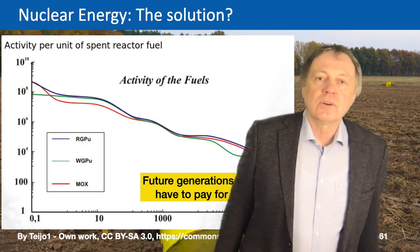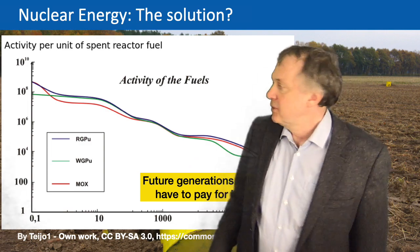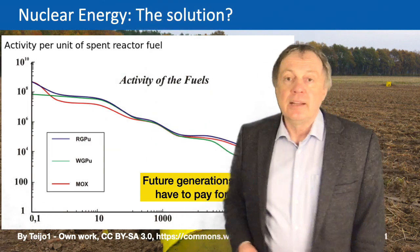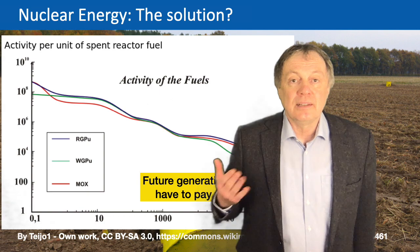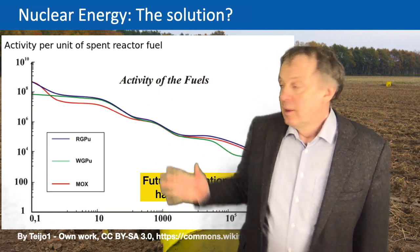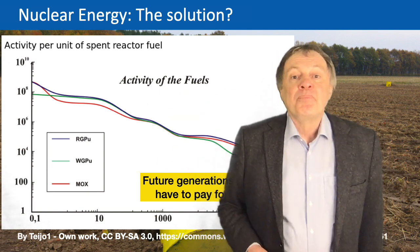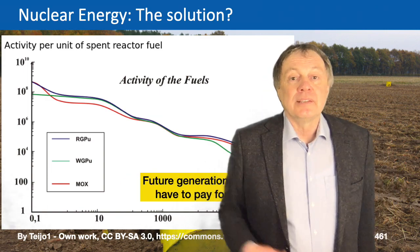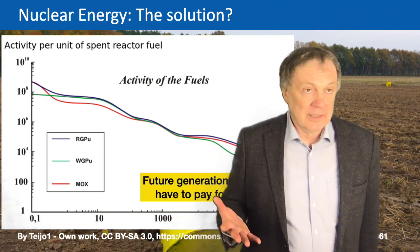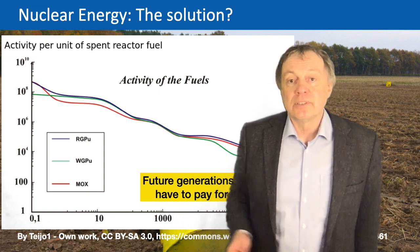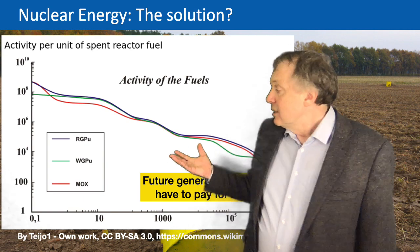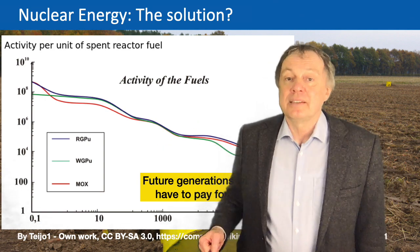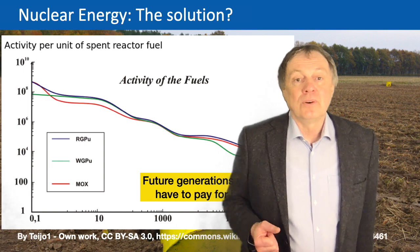Let's have a closer look at the radioactive waste of a nuclear reactor. The vertical scale shows in an arbitrary unit how much radioactivity remains in the nuclear waste — it's a logarithmic scale. On the x-axis you have the number of years since the radioactive waste is taken out of the reactor, also on a logarithmic scale. You can see that it takes hundreds of years before the radioactivity is really at a very low level.